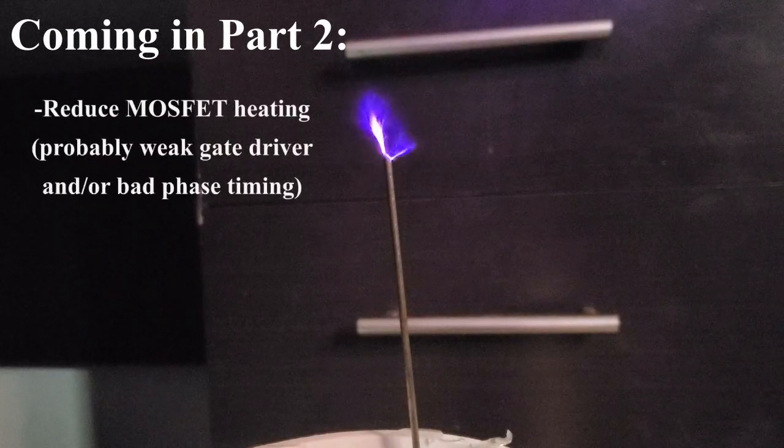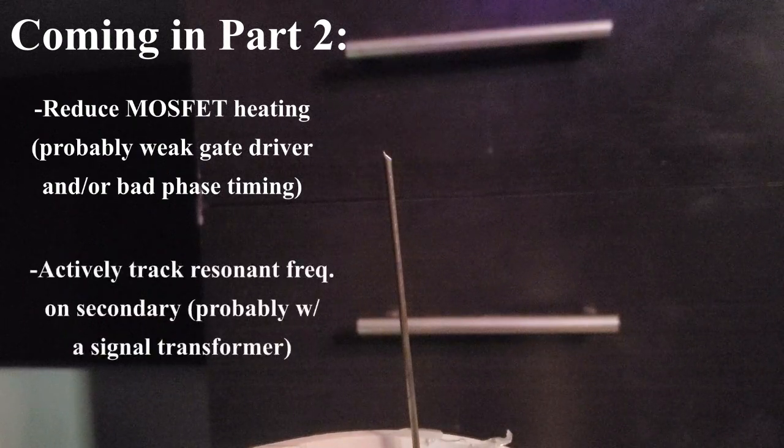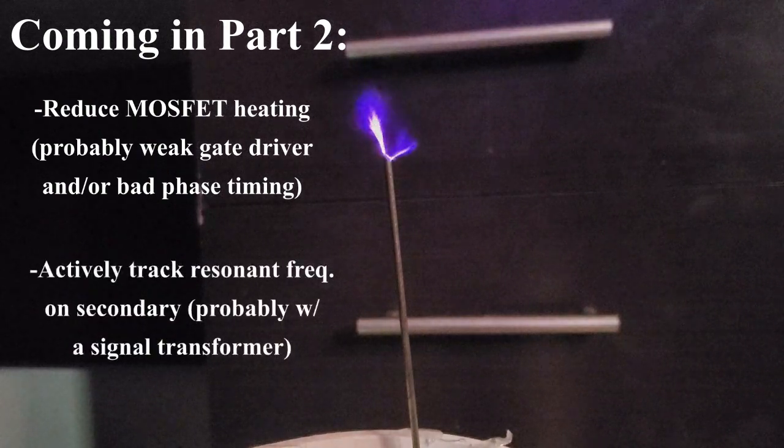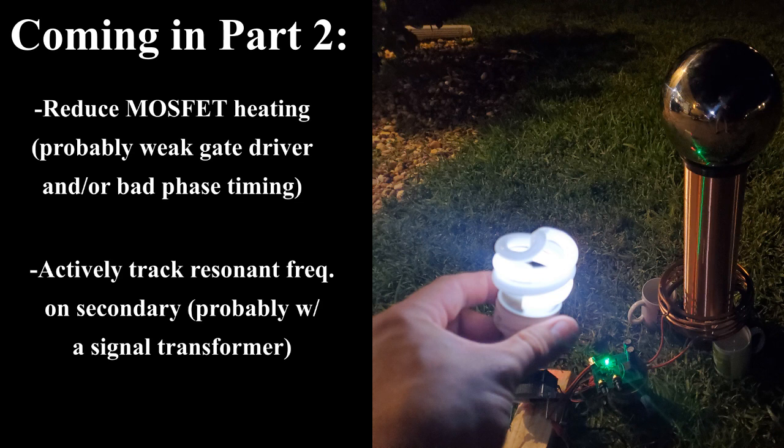First, I need to figure out how to avoid the huge MOSFET heating that's happening, and second, I need to figure out how to keep the primary driver locked on the secondary resonant frequency, because even with fine-tuning the 555 timer, it still drifts off. Both of these issues will require feedback signaling from the secondary coil, and I'll cover that in my next video.